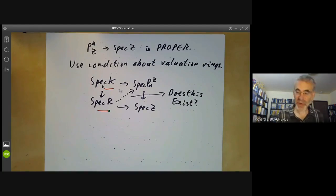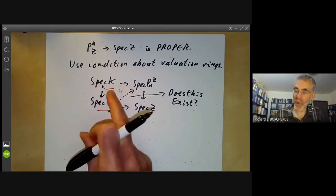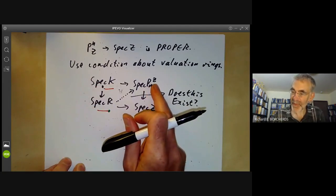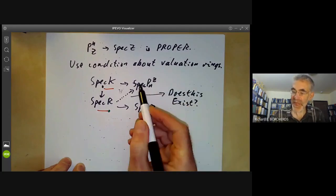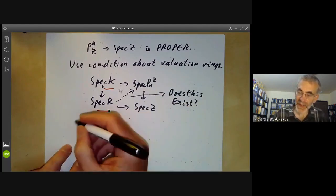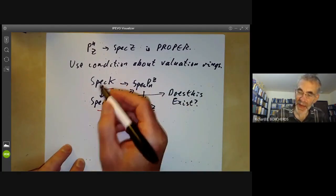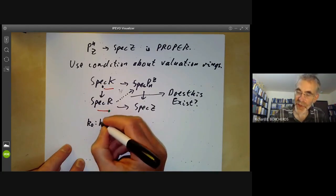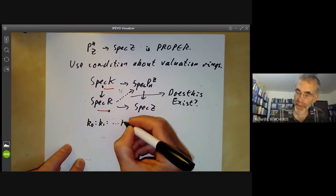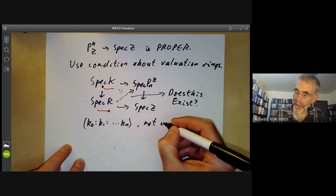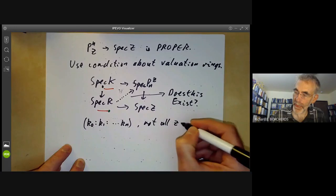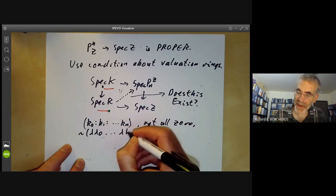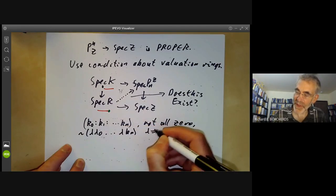And to do this, we just recall what are the morphisms from the spectrum of K to the projective space. As we saw earlier, they consist, can be described as a tuple of points K0 to KN, not all zero, where this is considered to be equivalent to lambda K0 up to lambda KN, whenever lambda is not equal to zero.